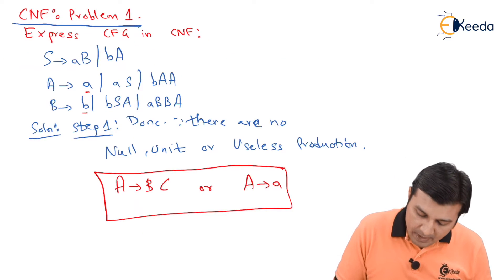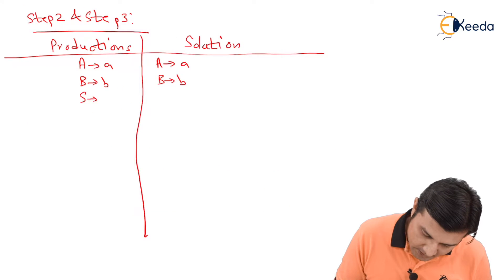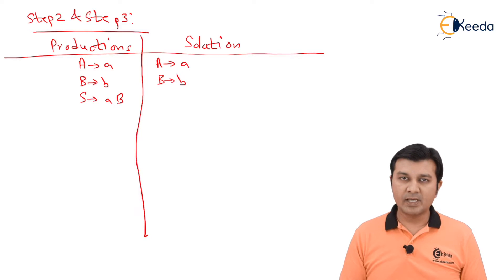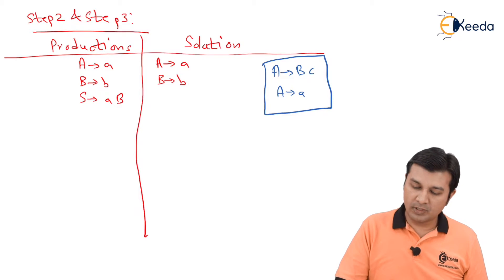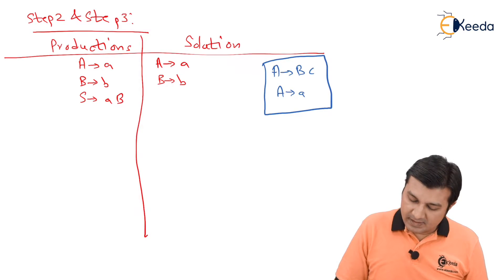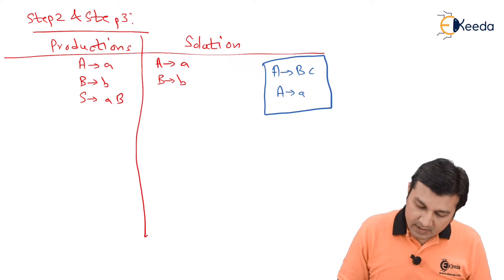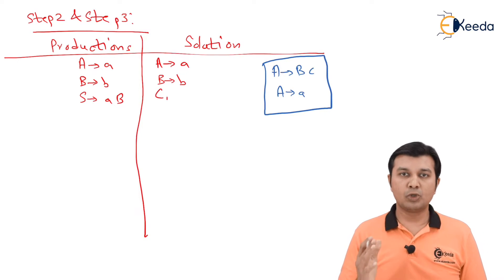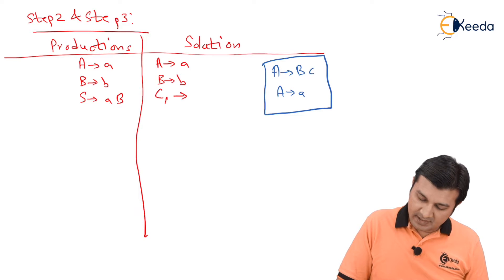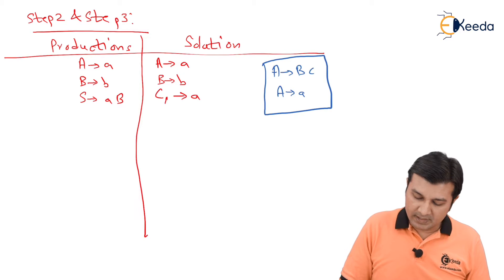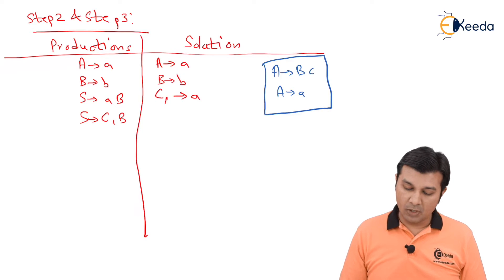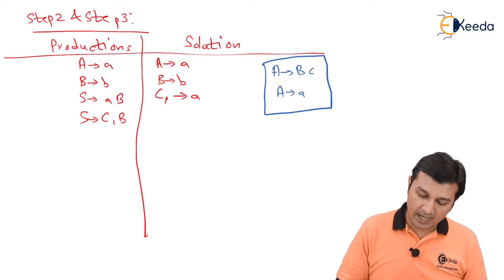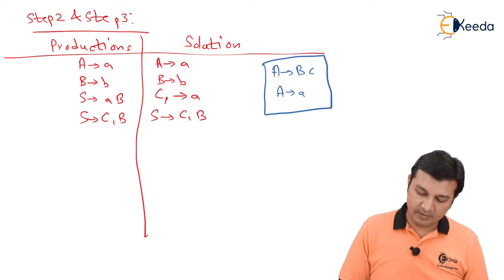Next, I consider S gives AB. S gives AB is not in CNF. So let us introduce a temporary variable C1 which gives small a. That allows me to write S gives C1B, and since both are variables, it is now in CNF form. I add S gives C1B to the solution.